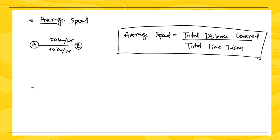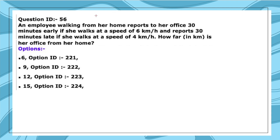These are the only two or three things you need to know to solve time and distance questions. Now let's take a question from a previous CSIR NET exam. This was asked in CSIR 2020: 'An employee walking from her home reports to her office 30 minutes early if she walks at 6 km/h, and reports 30 minutes late if she walks at 4 km/h. How far in kilometers is her office from home?'